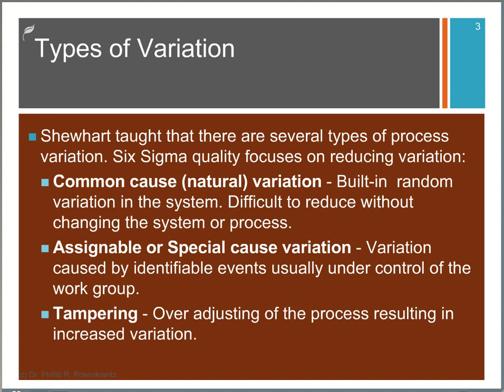The second type is Assignable or Special Cause variation. This is variation that's easy to identify. Usually it's caused by things that are going on in the work area with the work group. It could be a worker error. It could be the wrong material stocked to the job. There's all kinds of different things, but they're usually identifiable and under the control of the work group.